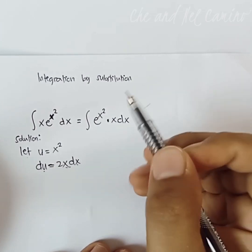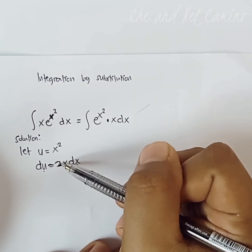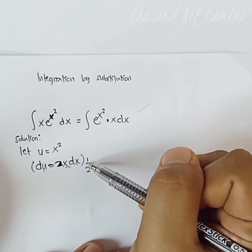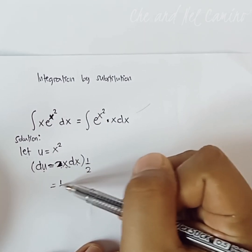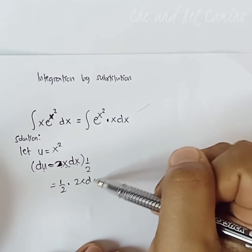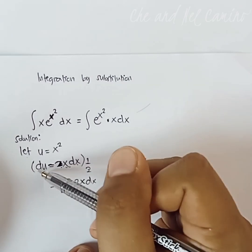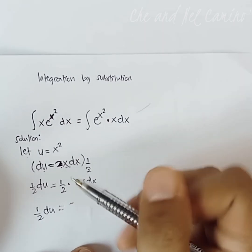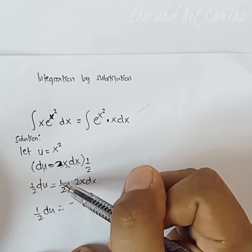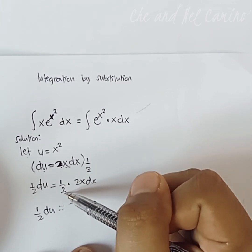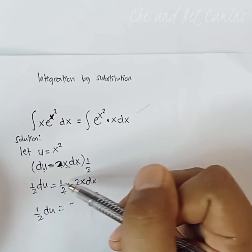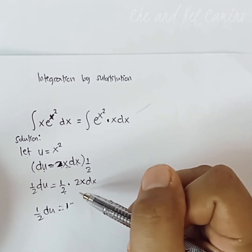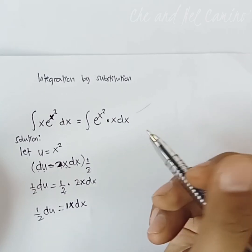In our derivative of u we have x dx. To isolate x dx, we cancel the 2 by multiplying both sides by one half. So one half times du equals one half times 2x dx, which gives us one half du equals x dx, since 2 over 2 equals 1.